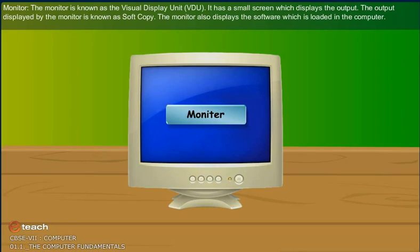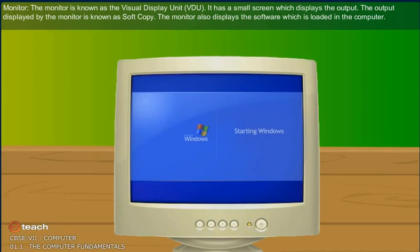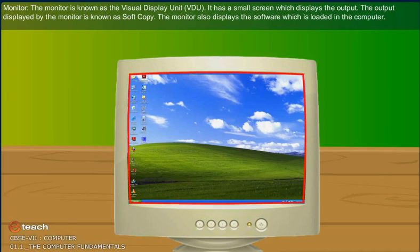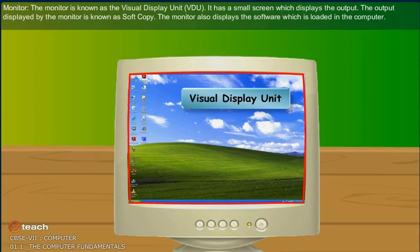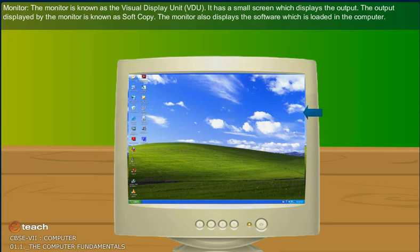Monitor: The monitor is known as the visual display unit, i.e. VDU. It has a screen which displays the output. The output displayed by the monitor is known as soft copy. The monitor also displays the software which is loaded in the computer.